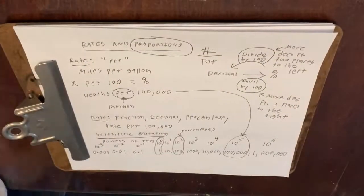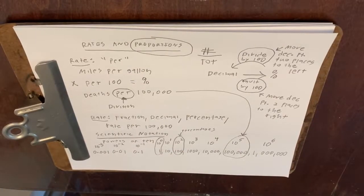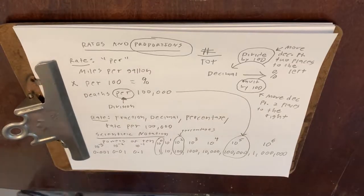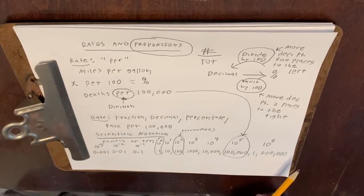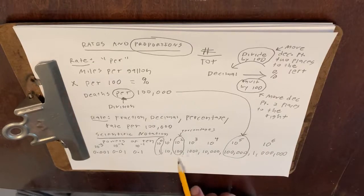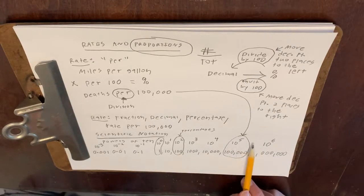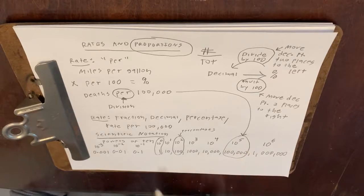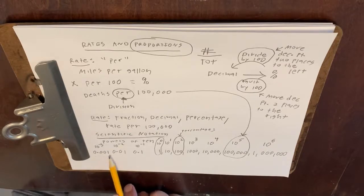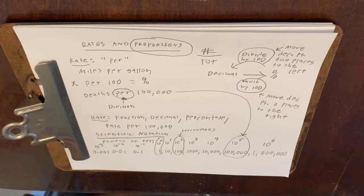Rates and proportions really shouldn't be terribly confusing, and it is necessary to understand the decimal place value system in order to understand them. Definitely know your powers of 10: 10 to the zero is one, 10 to the two is 100, 10 to the five is 100,000. And know that 10 to the negative one is 0.1, 10 to the negative two is 0.01, 10 to the negative three is 0.001. This is really the basic idea of rates and proportions.